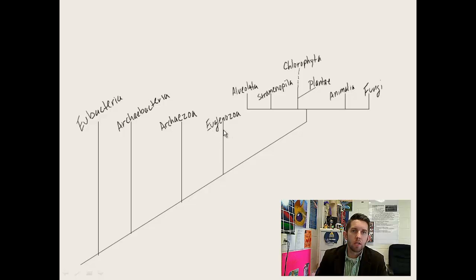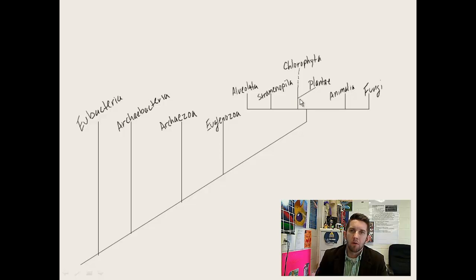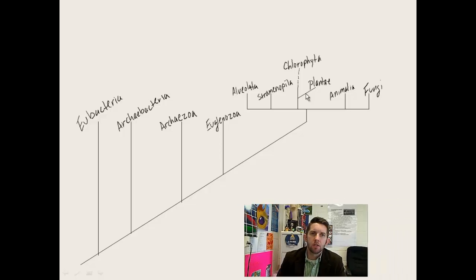The five proposed kingdoms are the archaeozoa, the euglenozoa, the alveolata, straminopola, and chlorophyta. Branching off the chlorophyta, which are the green algae, are the plants. So this is our origin — we have our origin in the green algae. We're diverging at this point, and we're going to look at how plants moved onto land, what had to happen for that, and plant phylogeny as well.